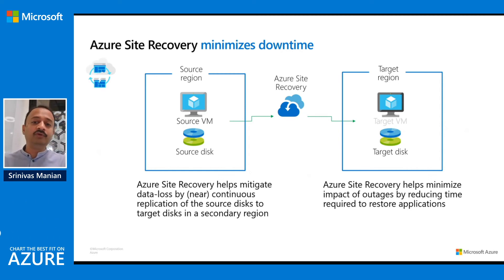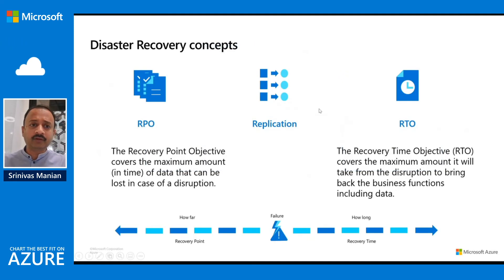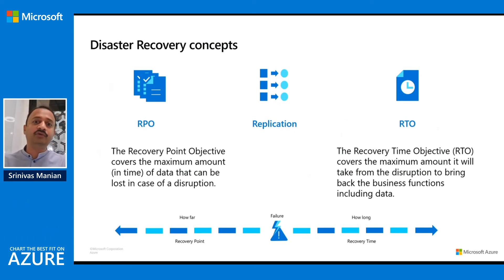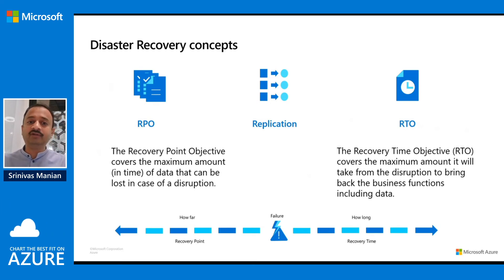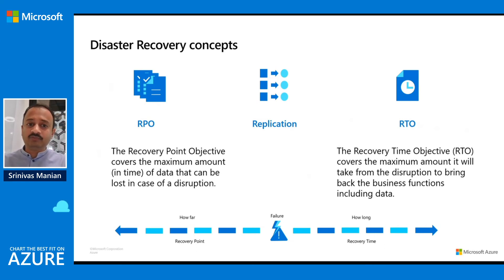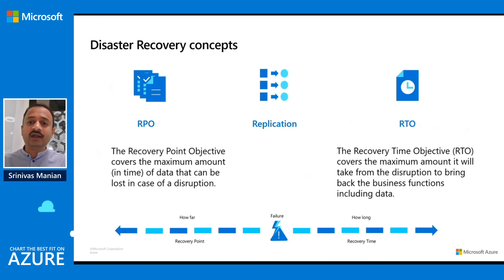Azure Site Recovery is going to help you minimize the impact of any outages by reducing the time required to restore your applications. One of the key things that drives your resiliency design and BCP would be your RTO and RPO — these are the SLAs. RPO covers the maximum amount of data that can be lost in case of any disruption, while RTO determines the amount of time it takes from disruption to bring back your service for users. To meet these targets, services need to provide data replication in a secondary region so that you are able to recover data as per the RPO and bring back services in time as per the RTO.